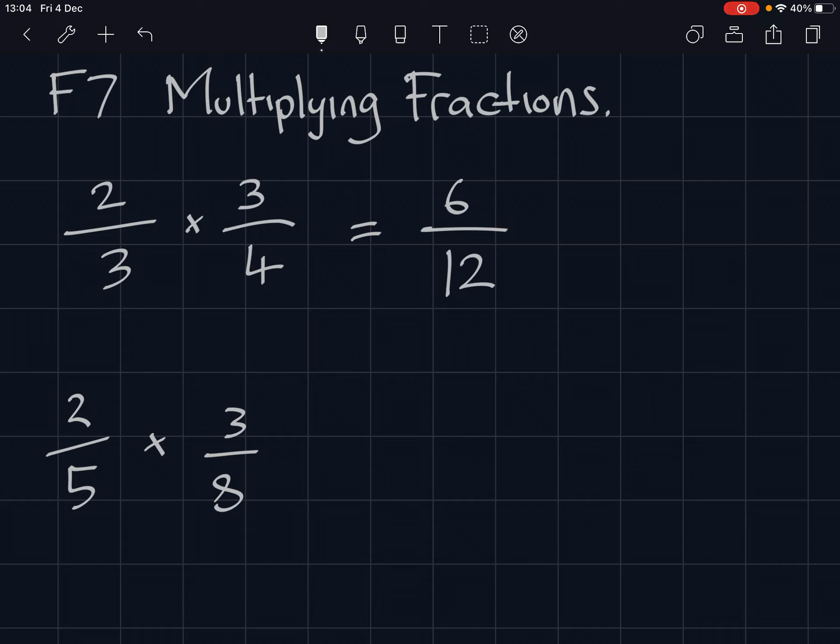And then we should simplify the fractions if we can. So let's simplify it by halving it. Half of six would be three, half of twelve would be six, and now we can divide them both by three. So that's one three, and that's two threes. So two-thirds times three-quarters is actually a half.